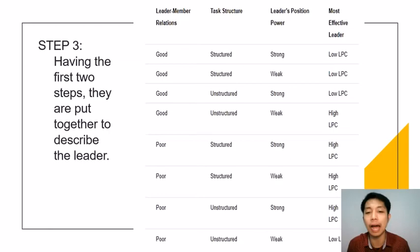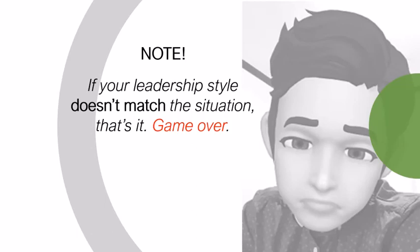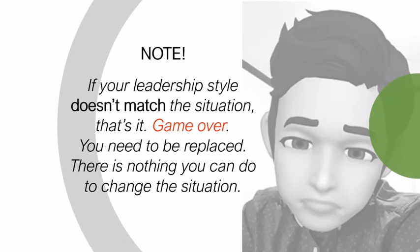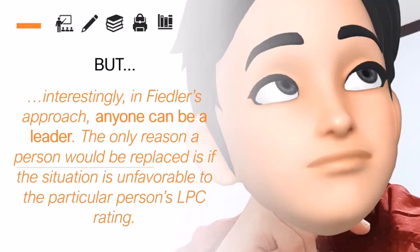Note: if your leadership style doesn't match the situation, you need to be replaced and there's nothing you can do about it — that is actually a disadvantage of Fiedler's contingency model. But interestingly, in Fiedler's approach, anyone can be a leader. The only reason a person would be replaced is if the situation is unfavorable to the particular person's LPC rating. The contingency approach is fairly straightforward in prediction: leaders are described as task-oriented or relationship-oriented. Those who are task-oriented will do better where the environment's tasks are better structured, and those who are relationship-oriented should be placed in situations with less structured tasks. So anyone can be a leader.